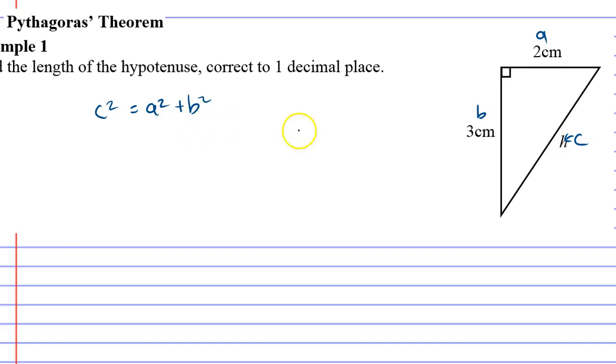Now, C represents our hypotenuse so we'll change it with H for hypotenuse. A represents 2 and B represents 3. So we're going to go 2 squared plus 3 squared. We've just replaced the A and the B with the associated number.